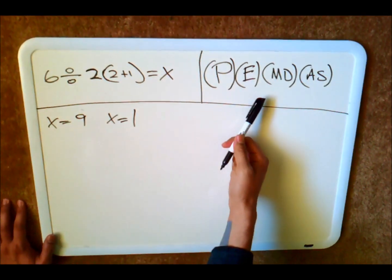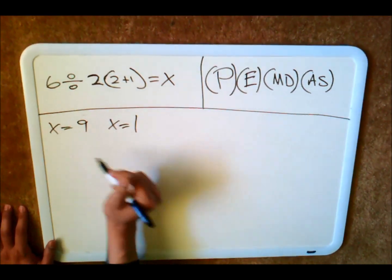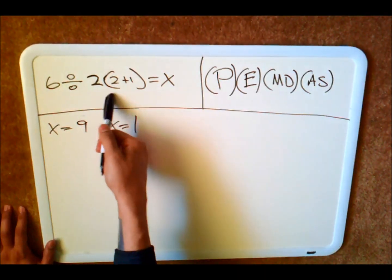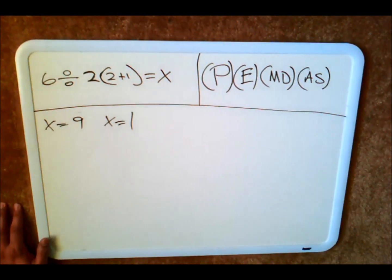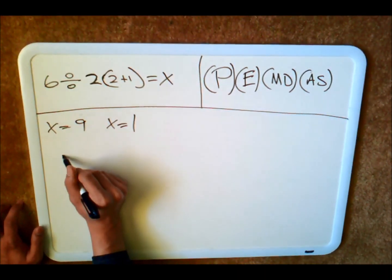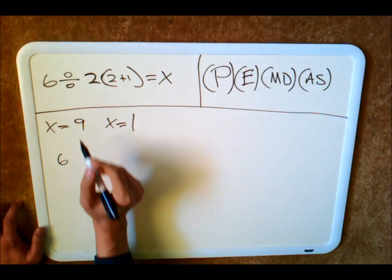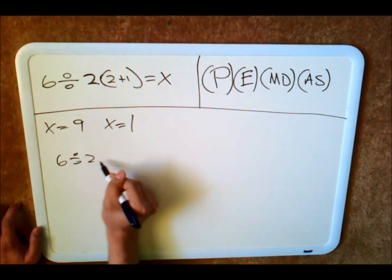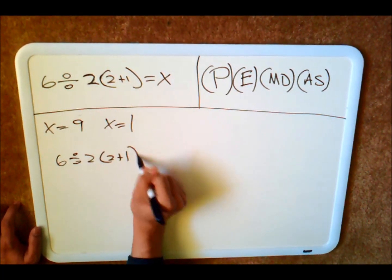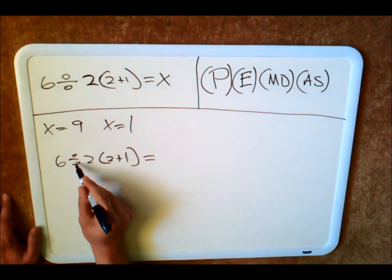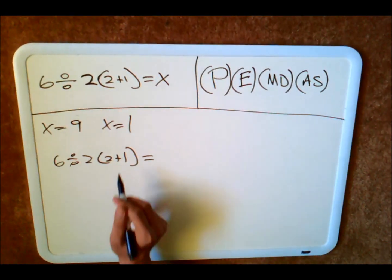The problem this is having is with the order of operations. People are doing it incorrectly. They're seeing parenthesis and they're thinking, oh, I'm going to multiply that first. So the error in that is that when you do that problem that way, you're actually doing the order of operations incorrectly and therefore it's going to be wrong.